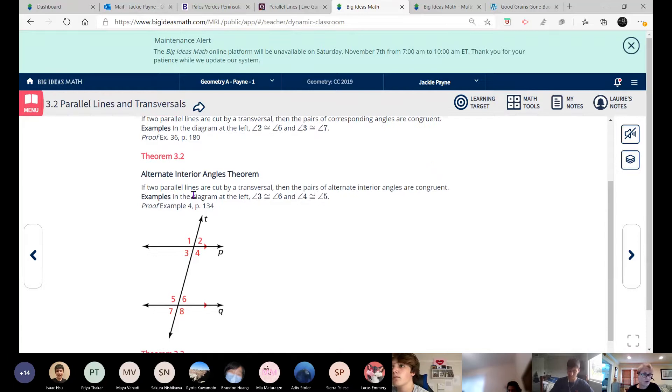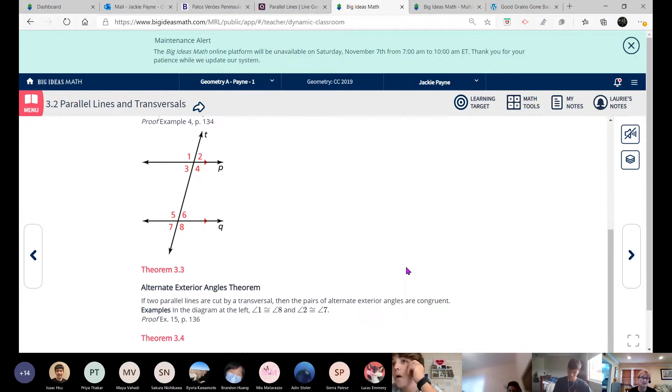And so there's a proof on page 180 in your book if you want. Look at example 36. But otherwise it looks kind of obvious. So we're not going to go through the proof right now. You can see it if you want. Theorem 3.2. So if two parallel lines are cut by a transversal, then those pairs of alternate interior angles are congruent. So just like we drew yesterday, three and six are on alternate sides of the transversal, so opposite sides, and they're between P and Q. That makes them interior. The other pair would be four and five, and that's it. There's no more. Again, there's a proof on page 134 if you want to see the proof.